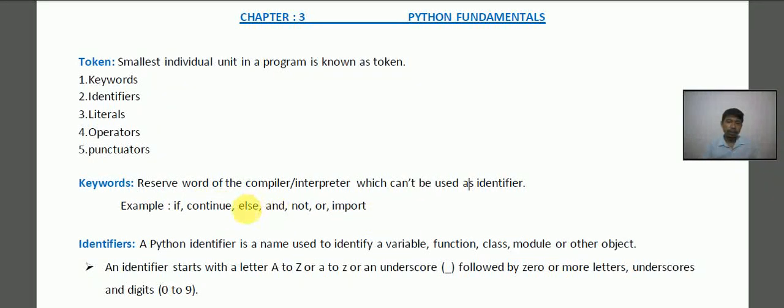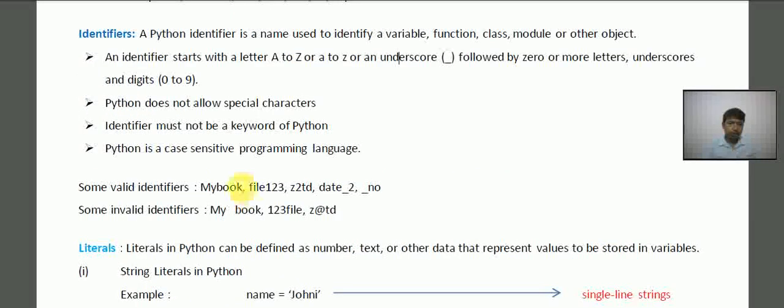These are words that have a special meaning to the compiler, so we cannot use them as an identifier. Next, identifier. So what is an identifier? A Python identifier is a name used to identify a variable,